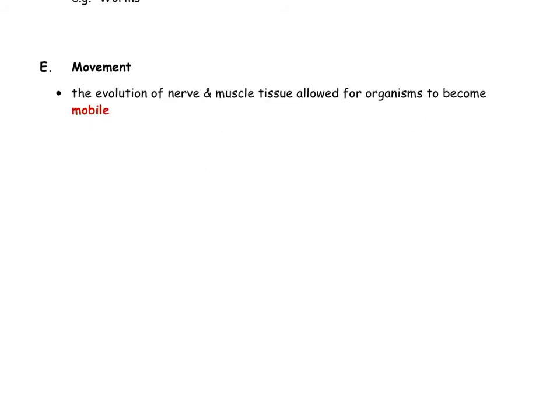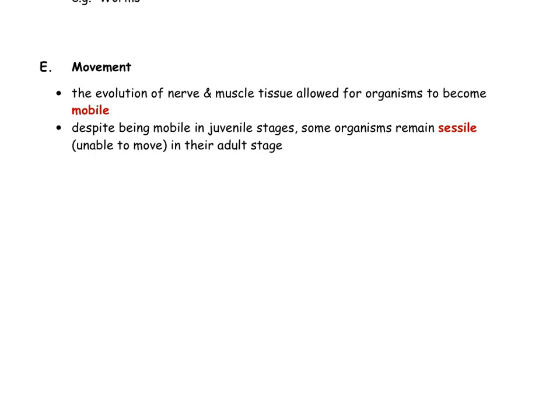The last characteristic to discuss today is movement. All animals need to be motile or mobile at some stage in their lives. As living organisms evolved, so did nerve and muscle tissue, which allowed certain classes of organisms to become mobile, including animals. Sometimes we have organisms such as sponges that are mobile in their early or juvenile stages, but become immobile — the scientific word for that is sessile — in their adult stage. Sponges and corals are good examples of that.